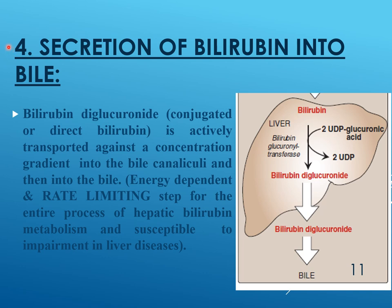Step 4 — secretion into bile: bilirubin diglucuronide, also called conjugated, direct, or soluble bilirubin, is actively transported against a concentration gradient into the bile canaliculi and then into bile. This process is energy-dependent and is the only rate-limiting step for the entire process of hepatic bilirubin metabolism; it is susceptible to impairment in liver diseases.